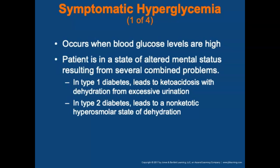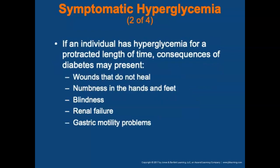Symptomatic hyperglycemia occurs when blood sugar levels are very high, placing the patient in a state of altered mental status resulting from several combined problems. In type 1 diabetics, this leads to ketoacidosis with dehydration from excessive urination. In type 2 diabetes, this leads to a non-ketotic hyperosmolar state of dehydration due to fluid discharge from all body systems, eventually leading to a fluid imbalance. If an individual is hyperglycemic for a prolonged time, consequences include wounds that do not heal, numbness in the hands and feet, blindness, renal failure, or gastric motility problems.